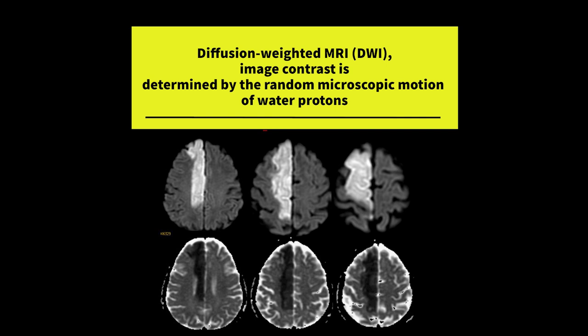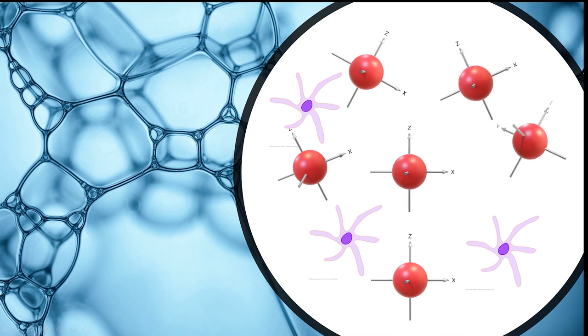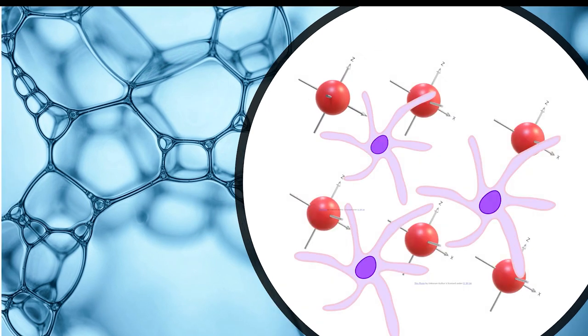Diffusion weighted imaging is based on random microscopic motion of water protons. A graphic illustration shows the random movement of water molecules in the extracellular space. Whenever there is ischemia or a highly cellular tumor, there is restriction in the movement of these water molecules. This restriction produces a bright signal when gradients are applied in the voxel, resulting in diffusion restriction.